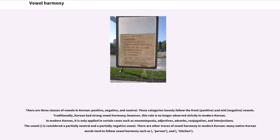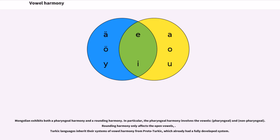Traditionally, Korean had strong vowel harmony; however, this rule is no longer observed strictly in modern Korean. In modern Korean, it is only applied in certain cases such as onomatopoeia, adjectives, adverbs, conjugation, and interjections. Mongolian exhibits both a pharyngeal harmony and a rounding harmony. In particular, the pharyngeal harmony involves specific vowels. Rounding harmony only affects the open vowels. Turkic languages inherit their systems of vowel harmony from Proto-Turkic, which already had a fully developed system.